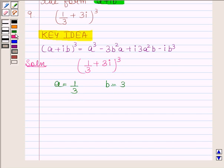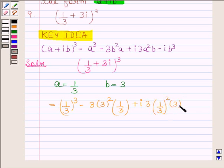this expression is equal to 1 by 3 whole cube minus 3 into 3 square into 1 by 3 plus iota into 3 into square of 1 by 3 into 3 minus iota into cube of 3.